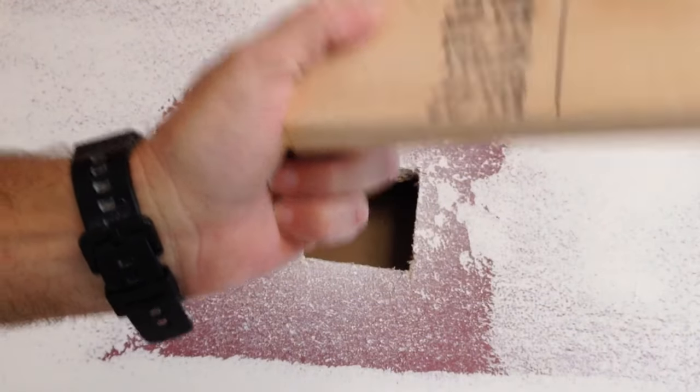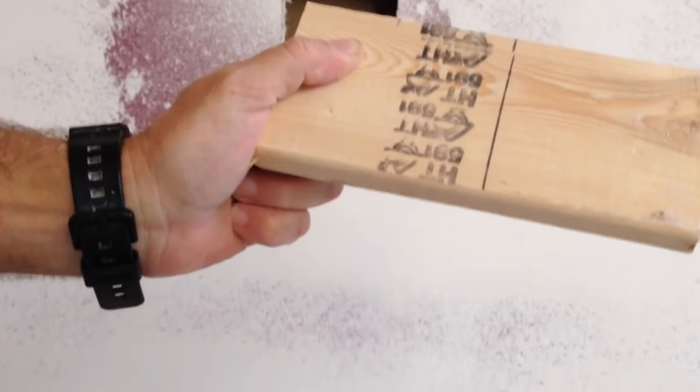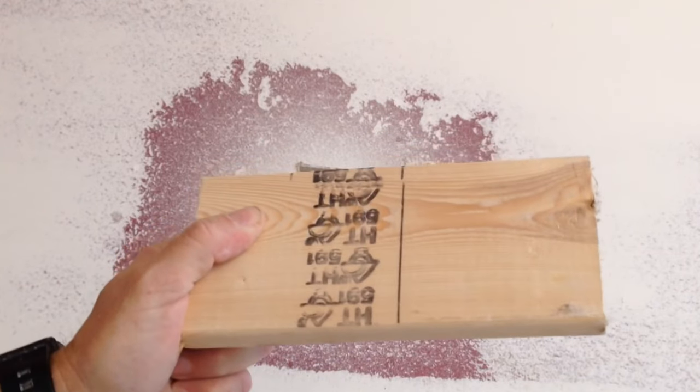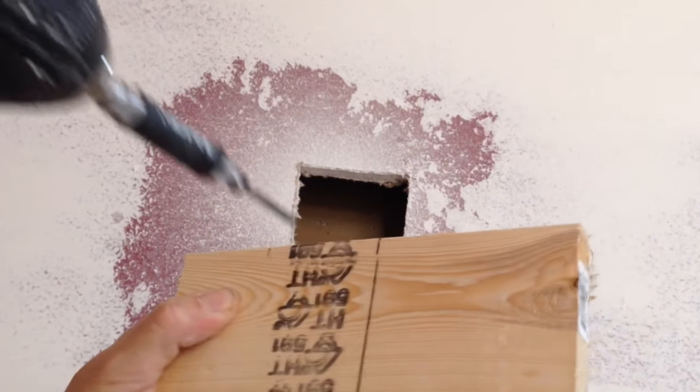Next, I'm going to take a furring strip and cut it about, the hole's probably four inches, so I'm going to cut it about eight inches.